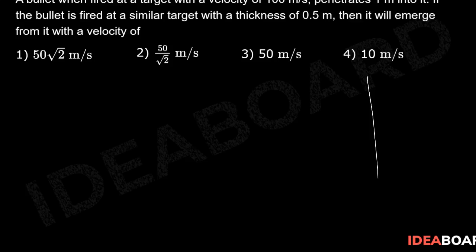Let's say the bullet is fired from here like this, and when it enters, its initial velocity is 100 meter per second and this is the target.